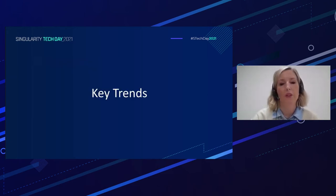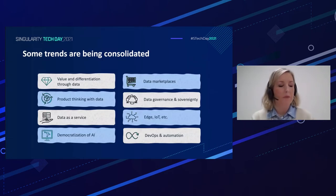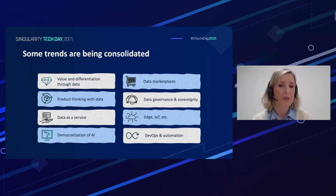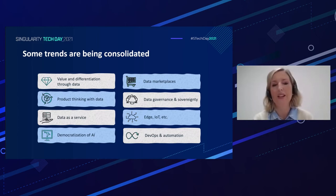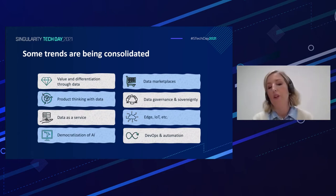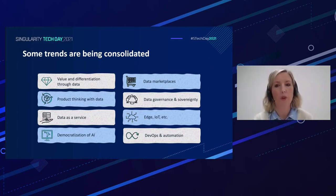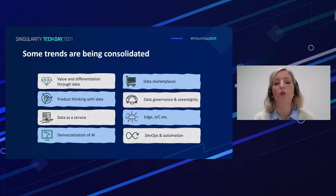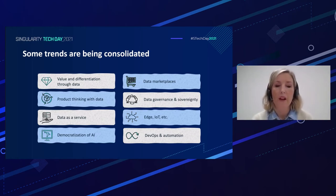Let's explore the key trends first. During the latest years we have seen big disruptive changes in application development and architectures, and more specifically in big data platforms. Companies are being pushed to differentiate and provide value directly related to the ownership of data. Another trend is product thinking applied to data — it's basically about owning the performance and the spread of use of the data.